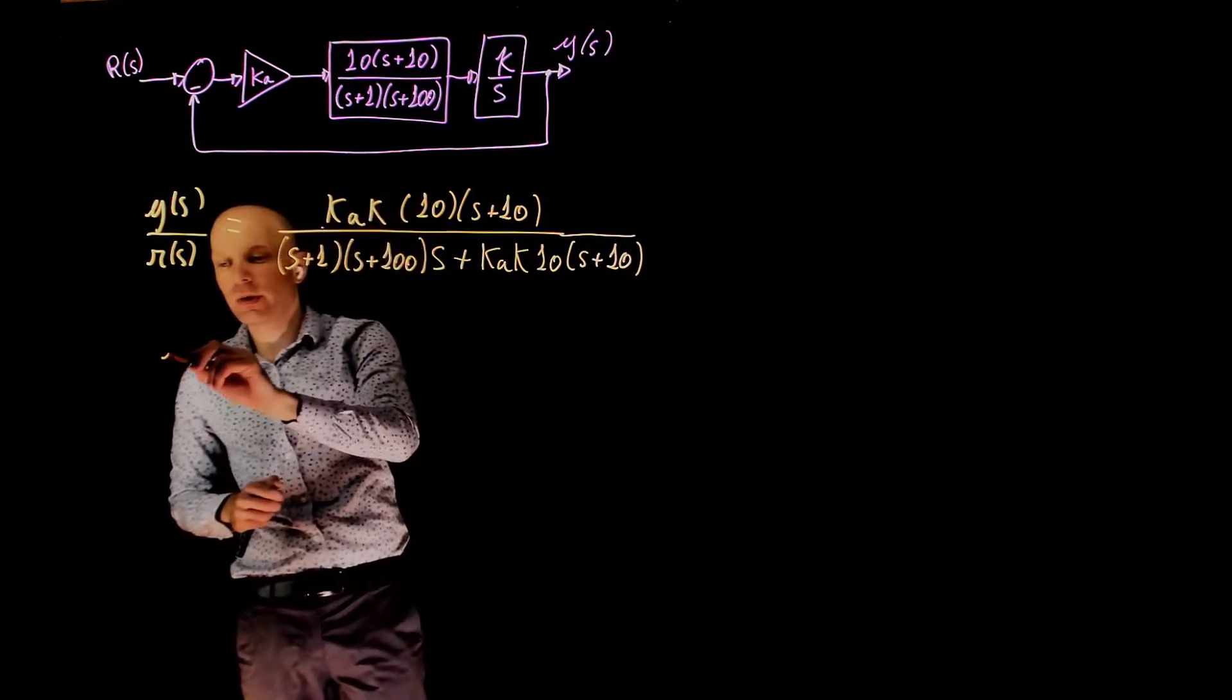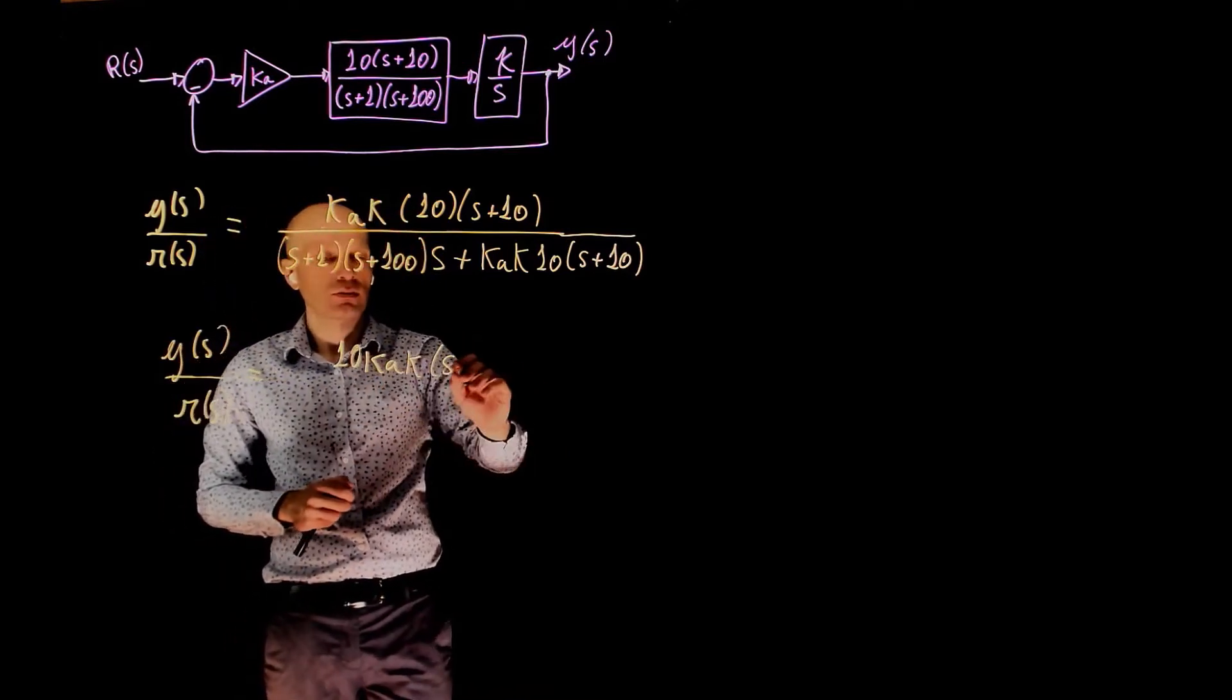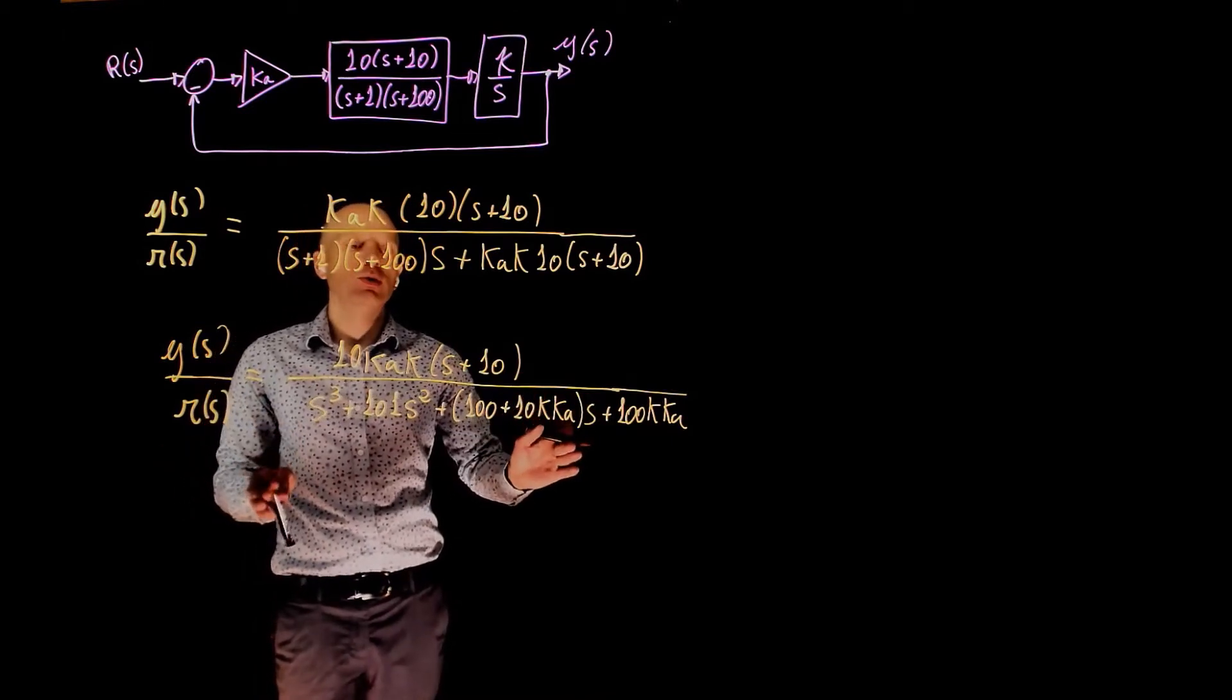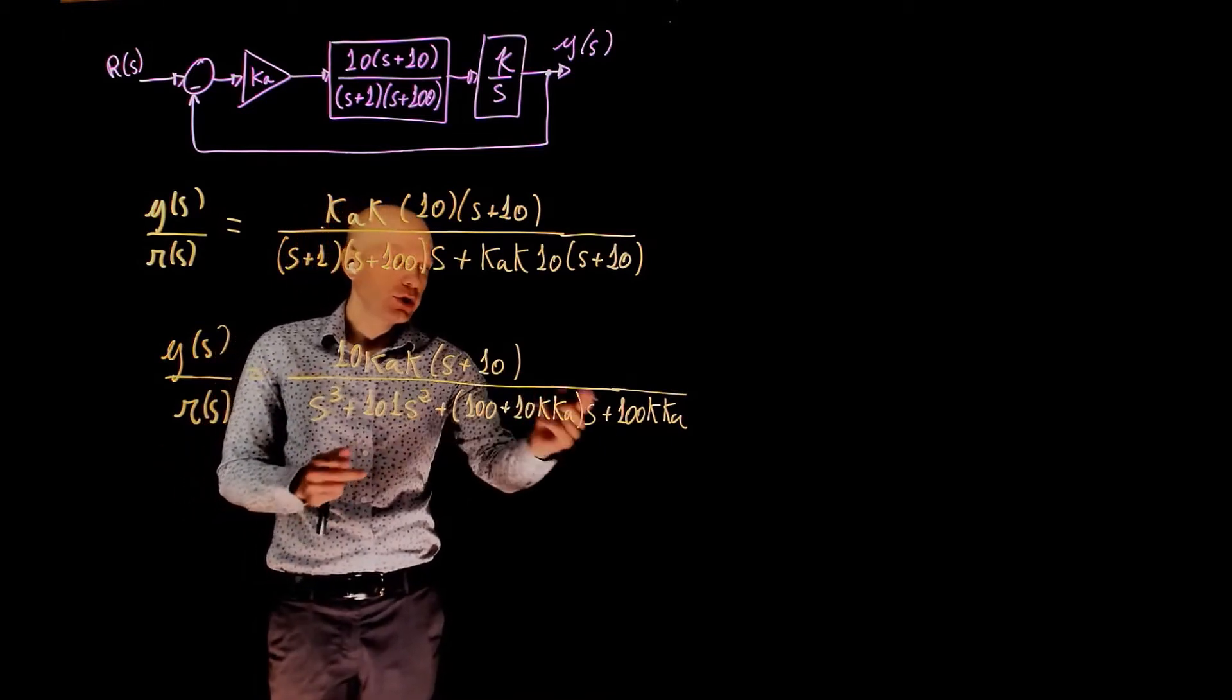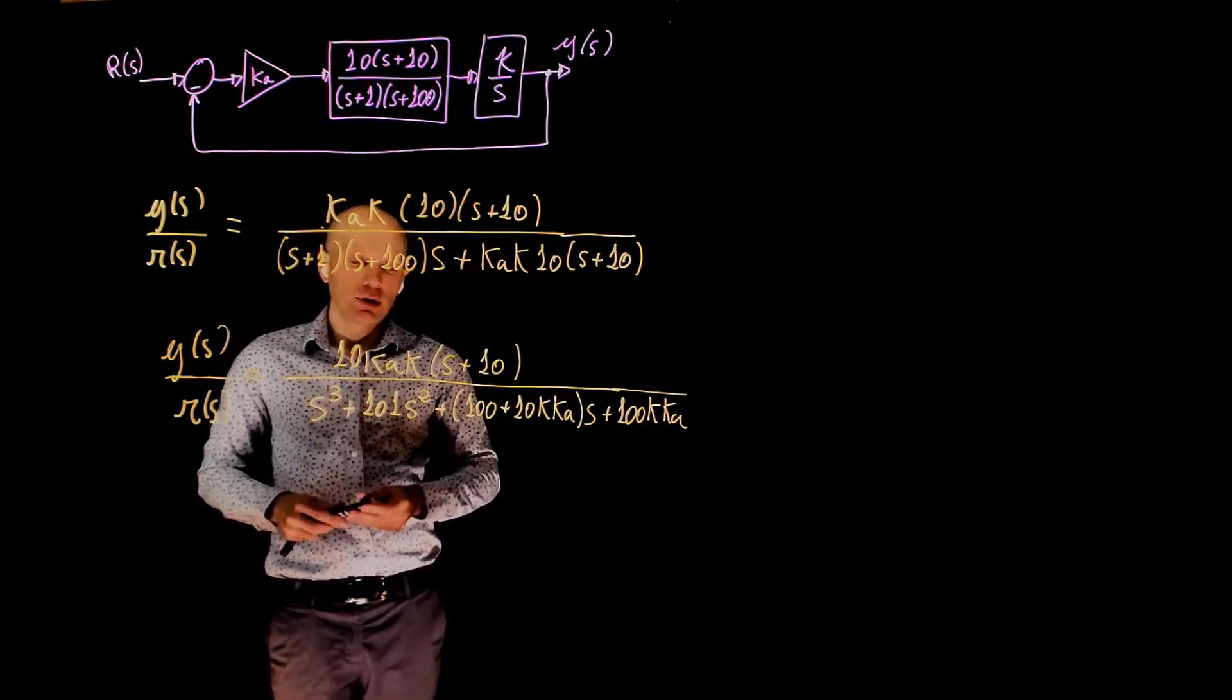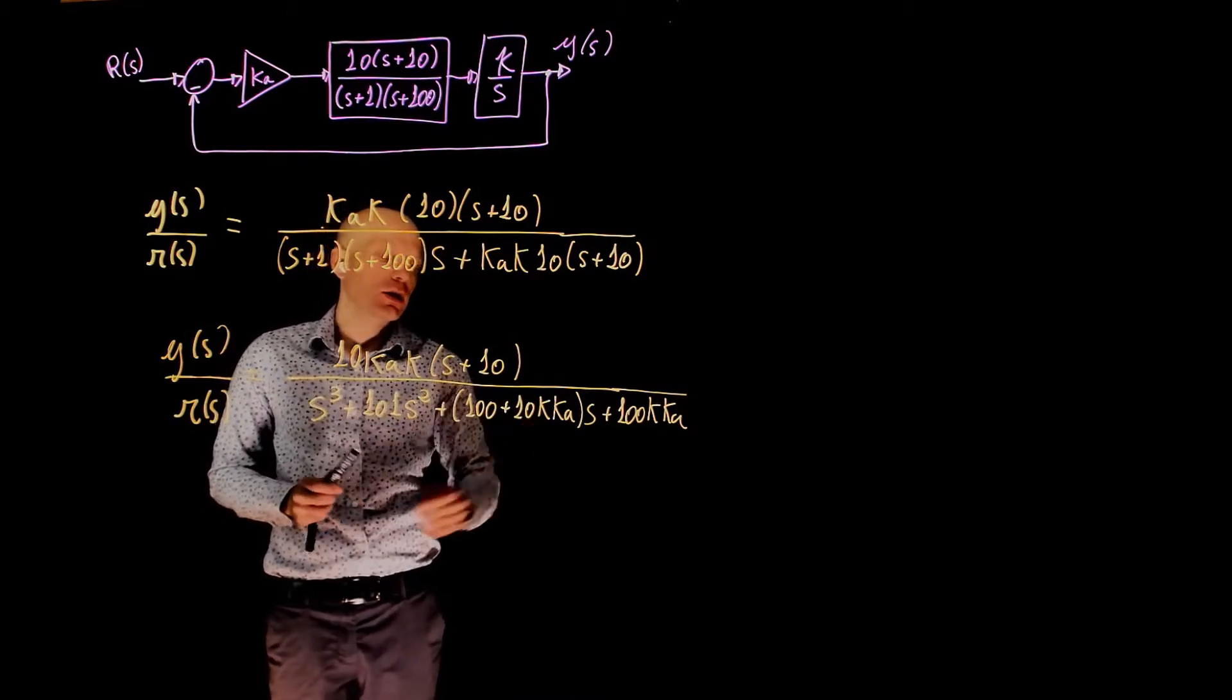And this rearranges to the following expression. This is now the closed loop transfer function, it's a third order polynomial. We can now proceed with the Routh array and then evaluate the stability based on the gain k times ka.